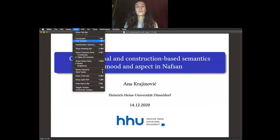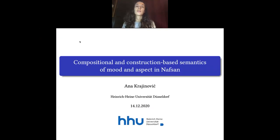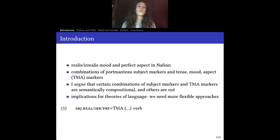I am Anna Krajnovic and today I will be talking about the compositional and construction-based semantics of mood and aspect in Nafsan, also known as self-sifate. My main focus are realist and irrealist mood and perfect aspect in Nafsan, and more specifically combinations of portmanteau subject markers that also denote tense, mood, and aspect meanings. In one you can see that we have such markers in Nafsan.